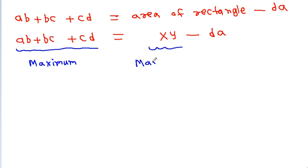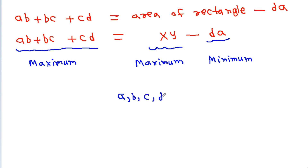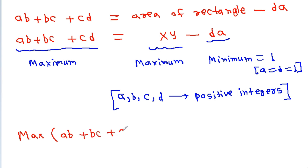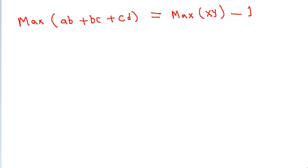To maximize ab + bc + cd = xy − da, we need xy to be maximum and da to be minimum. Since a, b, c, d are positive integers, the minimum value of da is 1, when both a = 1 and d = 1.